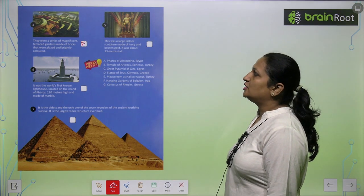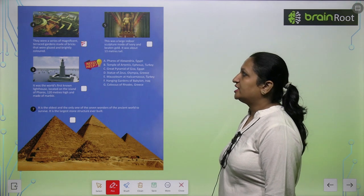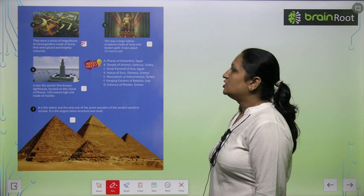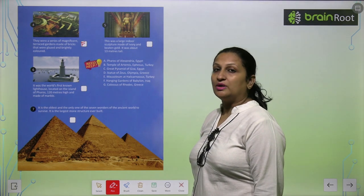This was a large indoor sculpture made of ivory and beaten gold. It was about 13 meters tall. This is the Statue of Zeus, Olympia, Greece. You can write here letter D.